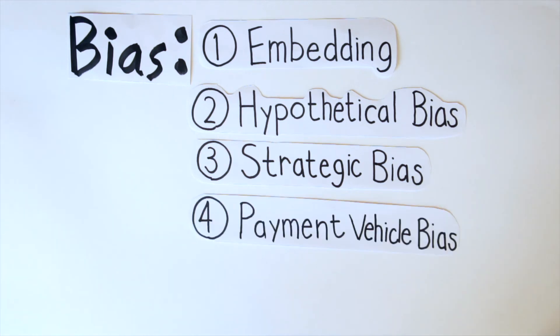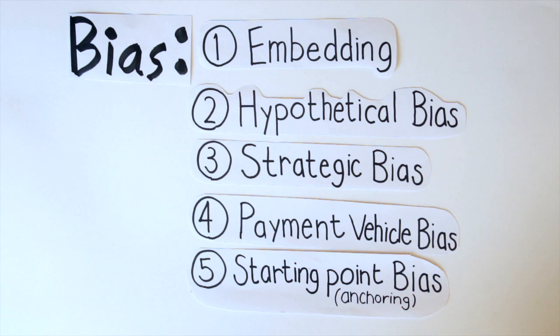Fourth, payment vehicle bias. This means that the payment vehicle influences the estimate. You can solve this problem using the pretest for a neutral payment vehicle. The last one is the starting point or anchoring bias. It is the problem that the first offer of the dichotomous choice or the bidding game method influences the estimate.